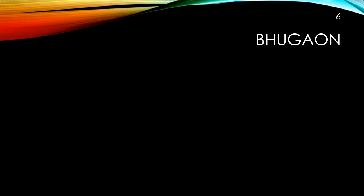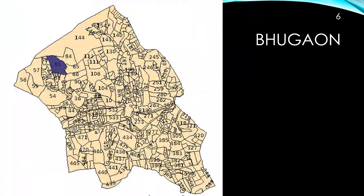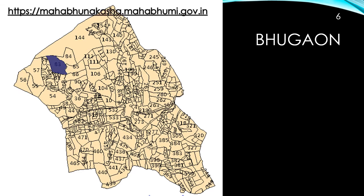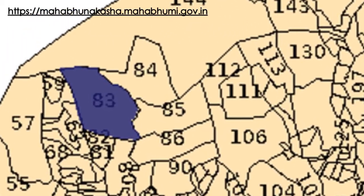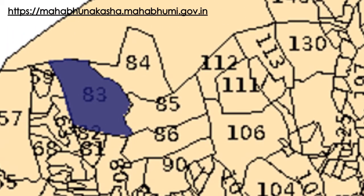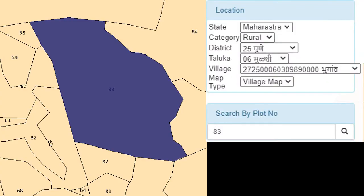Bhuga is located in Taluka Mulshi, and this is the government map available on the website, mapped by satellite. We are talking about survey number 83 — you can access this map on the link shown in the slide. Taking a closer view, that is where we lie, and this is survey 83 as shown on the right-hand side of the slide.